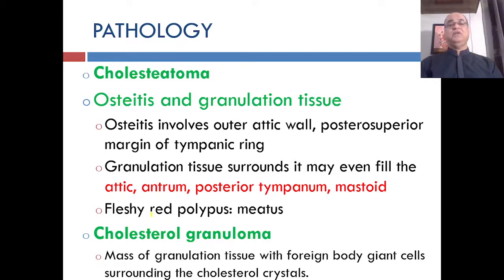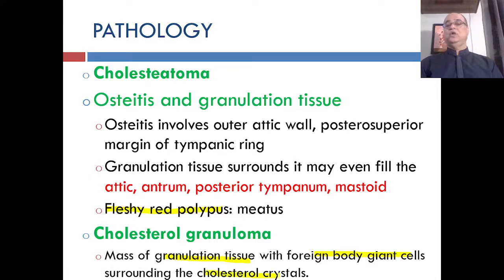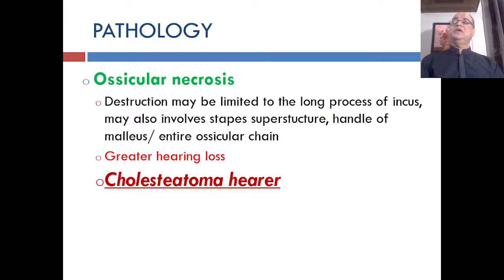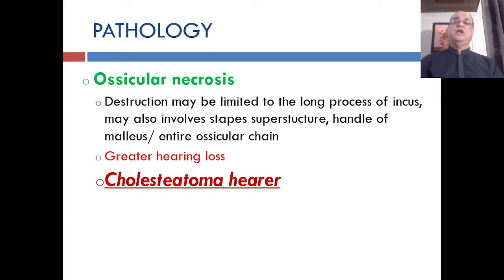Granulations will bleed on touch, and if a polyp is present it will be a fleshy red polyp in the external auditory canal. There can be cholesterol granuloma — a mass of granulation tissue with foreign body giant cells surrounding cholesterol crystals. Ossicular necrosis can occur due to destruction, which may be limited to the long process of the incus, or may also involve the stapes superstructure, handle of malleus, or even the entire ossicular chain, resulting in greater hearing loss.